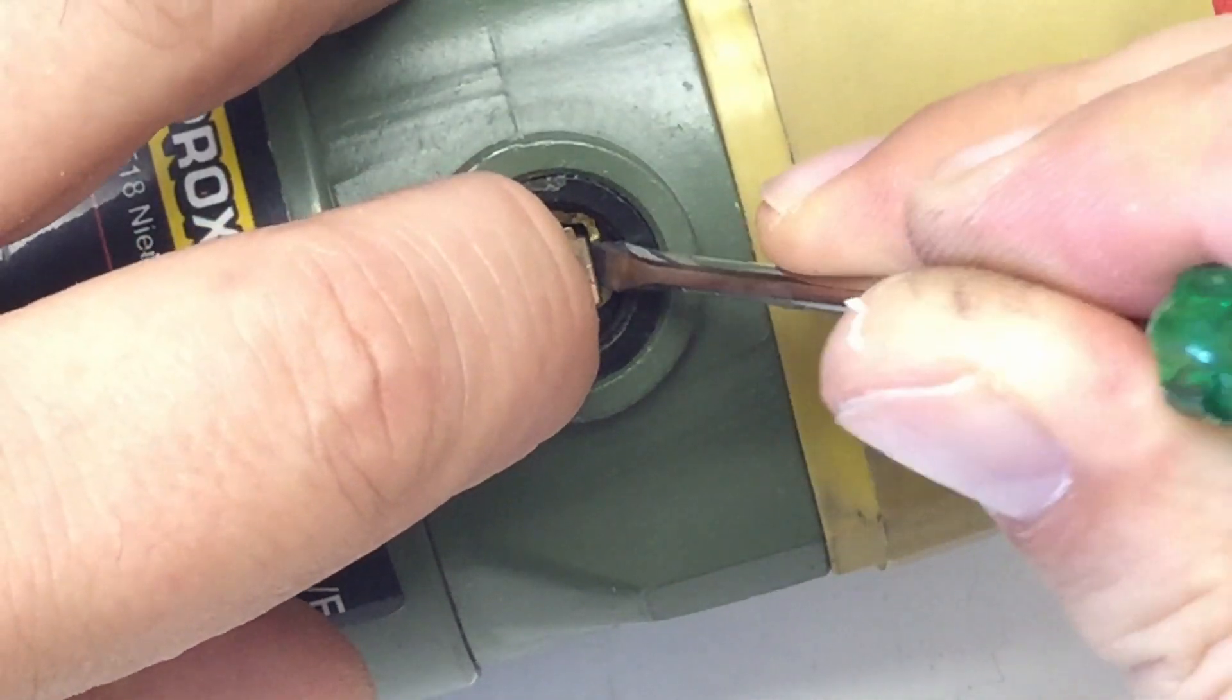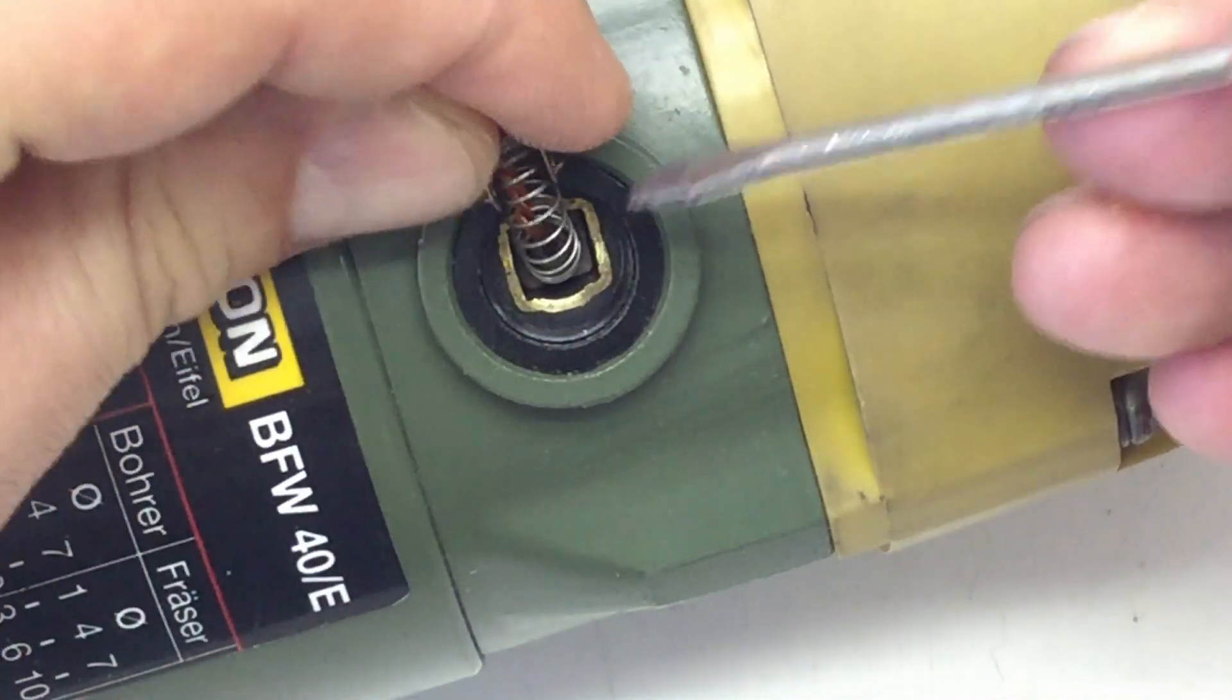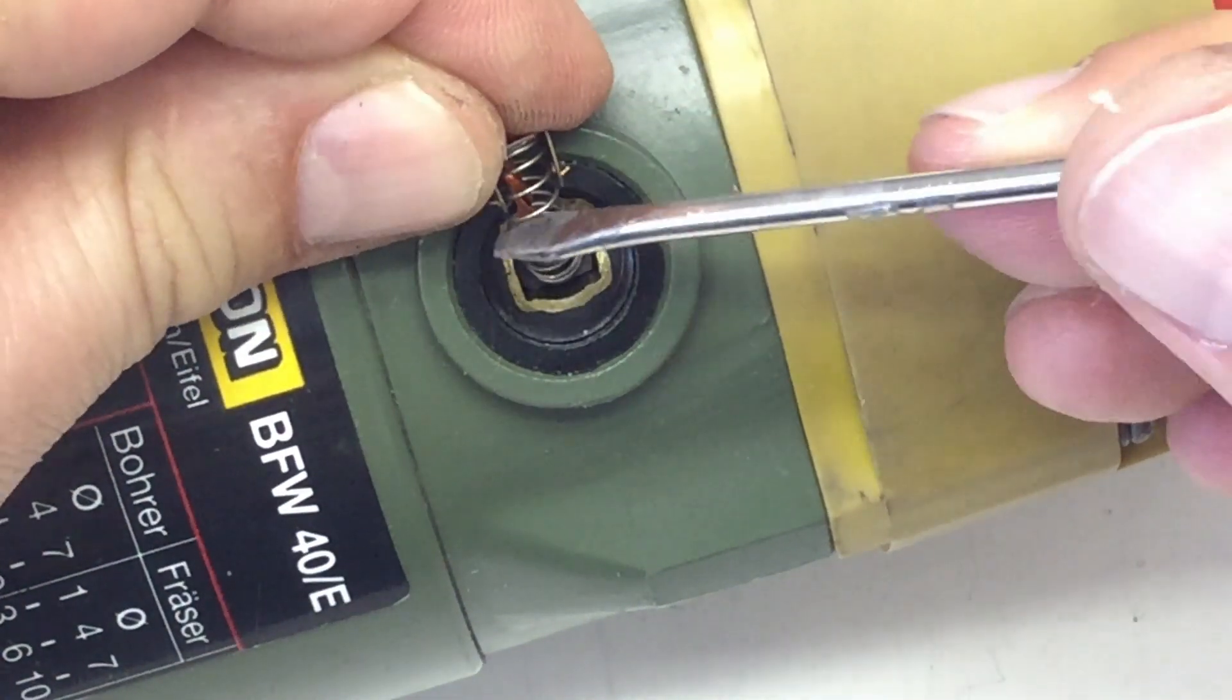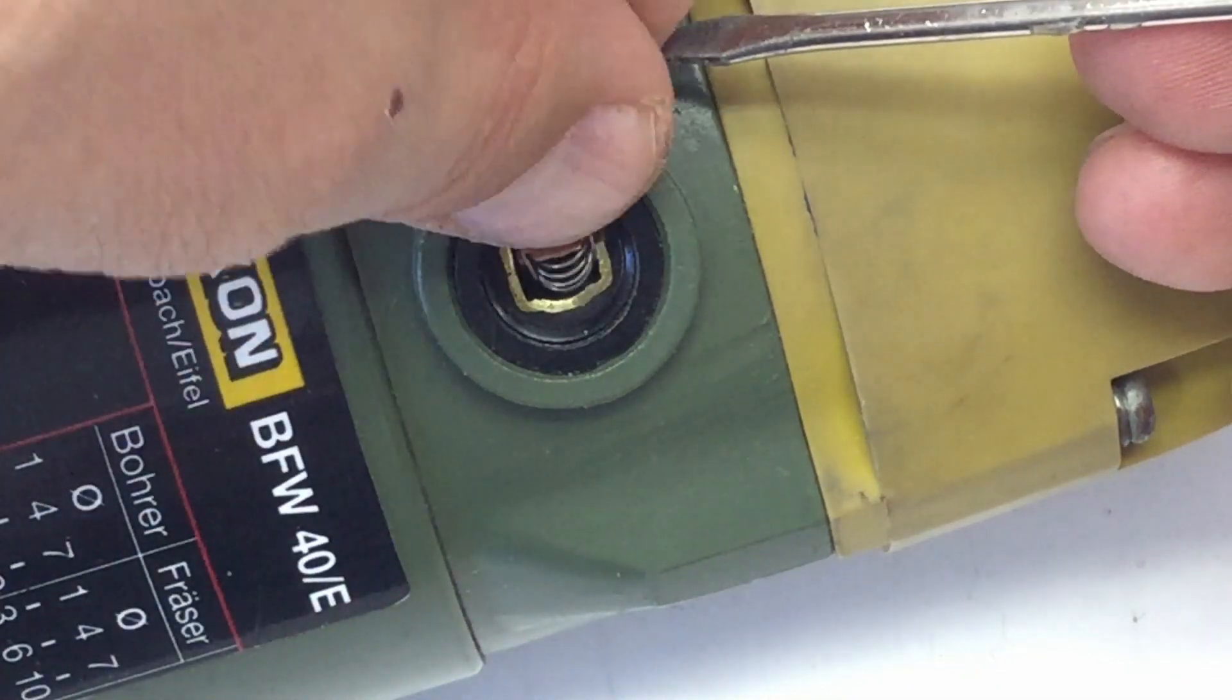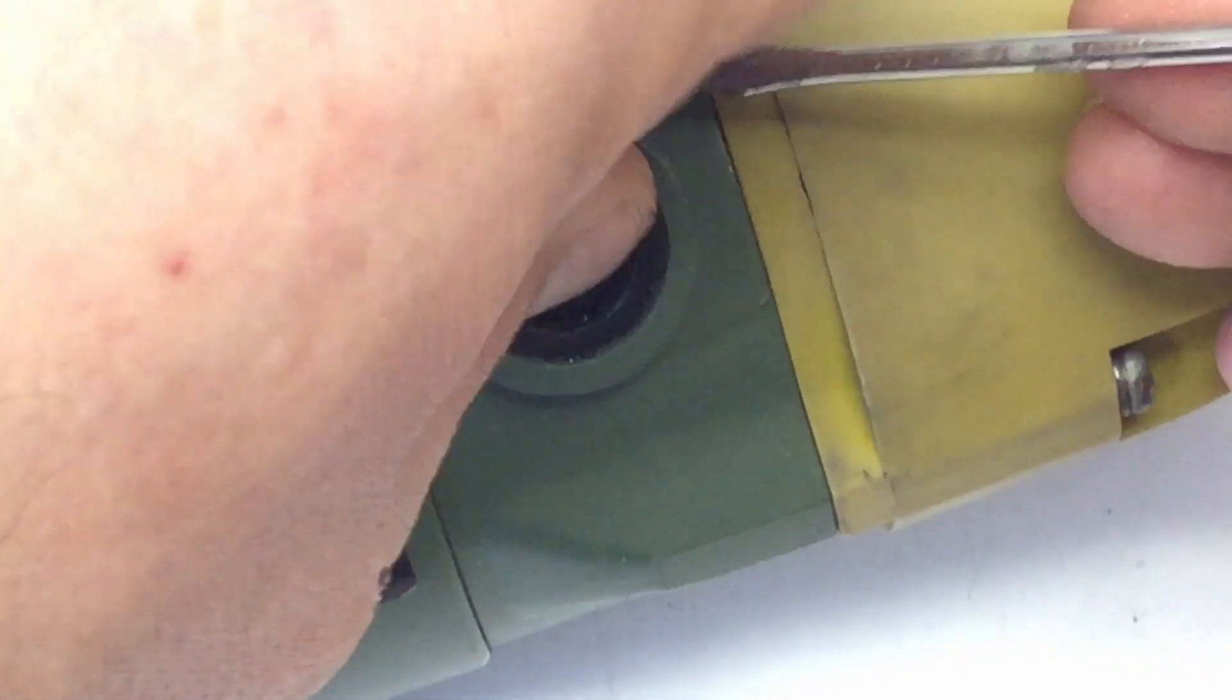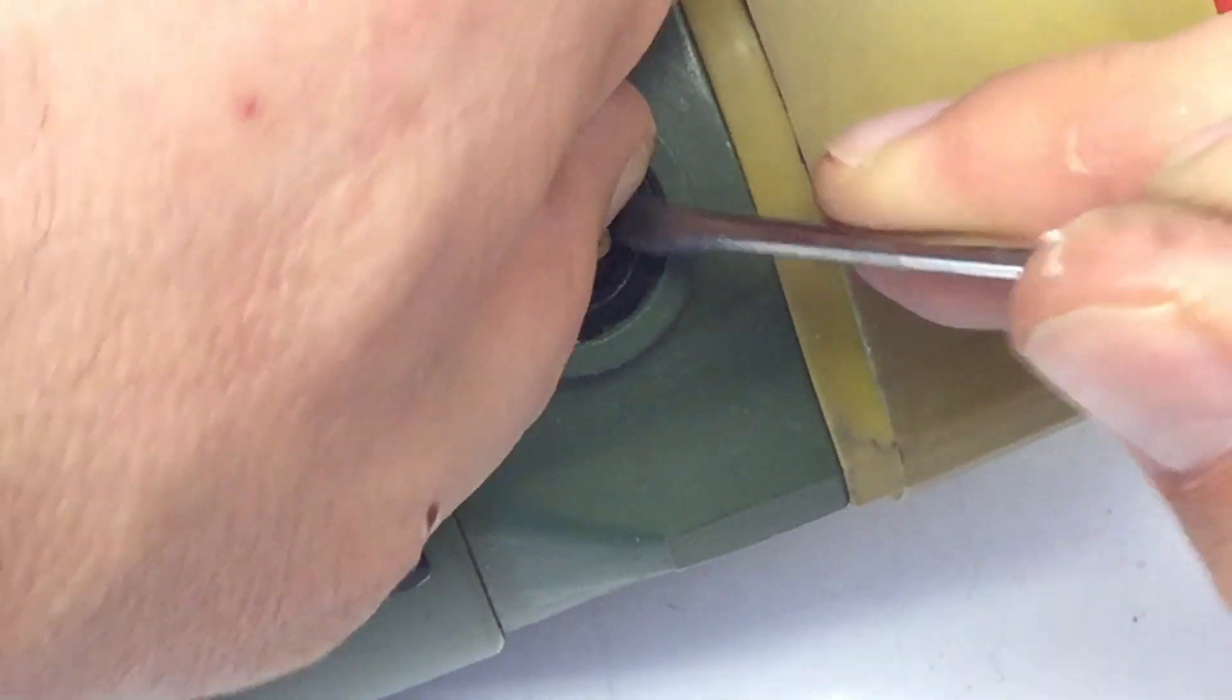Yeah you might have, it's kind of a snap-in because you have these little ledges here at the side. So it's a bit tricky. So that was one side.